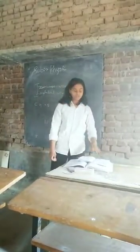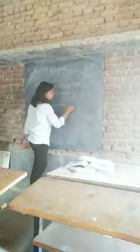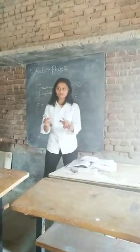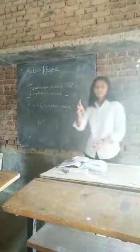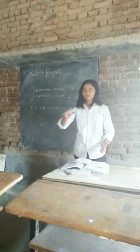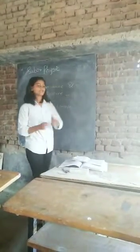Transverse waves — you can also consider water waves as an example. What are water waves? Suppose we have water kept in a glass. In what direction is the water going? If we disturb that glass, the wave moves in a direction — this is called transverse.